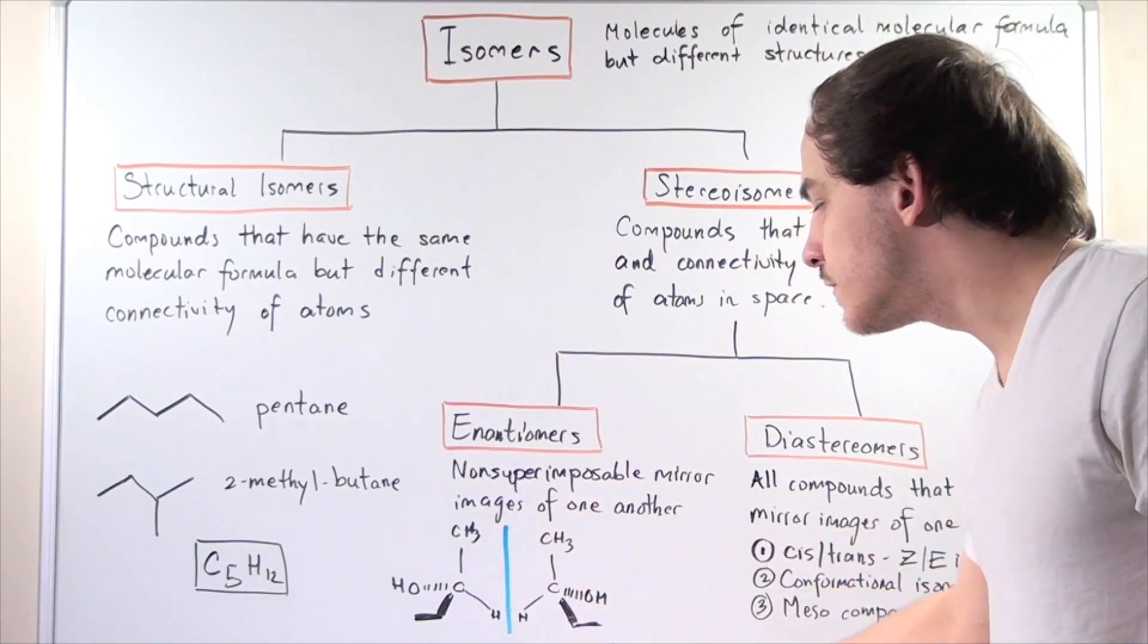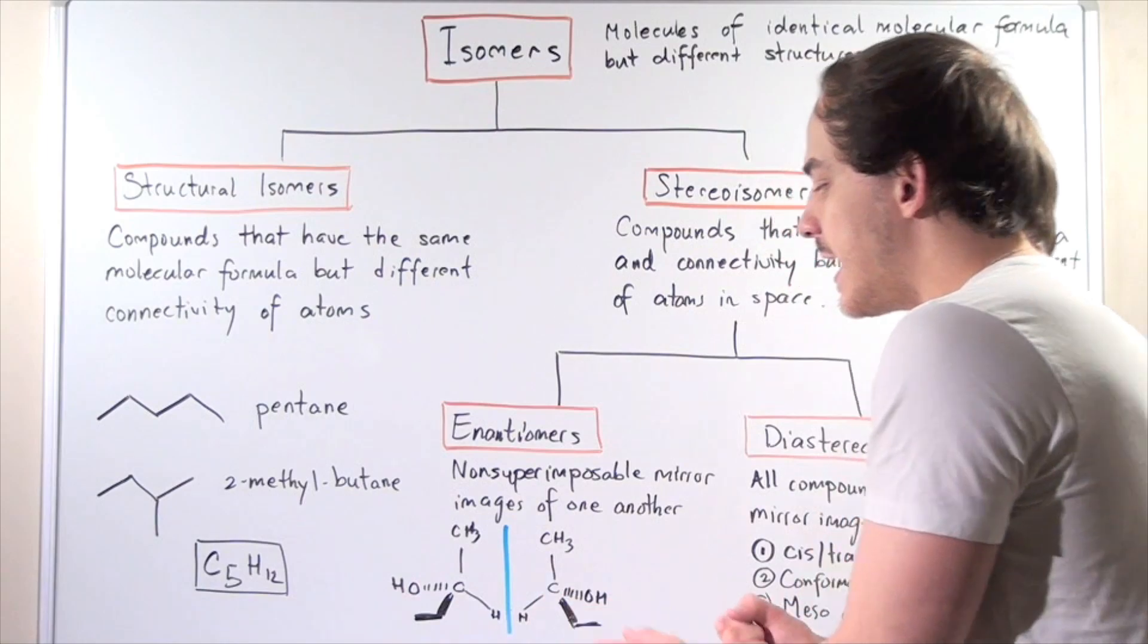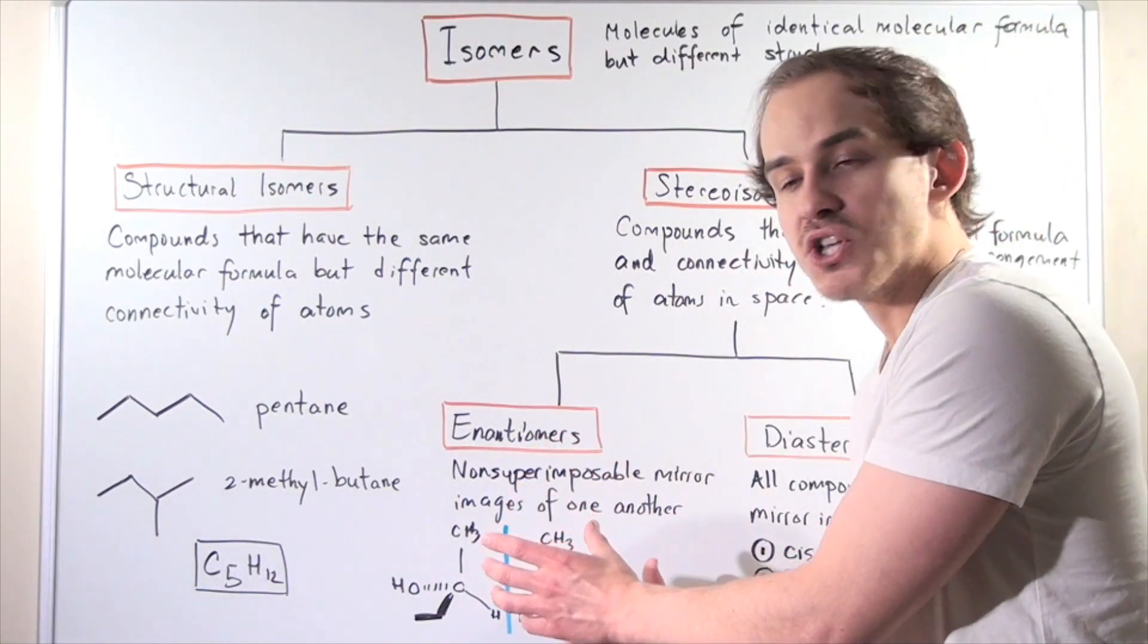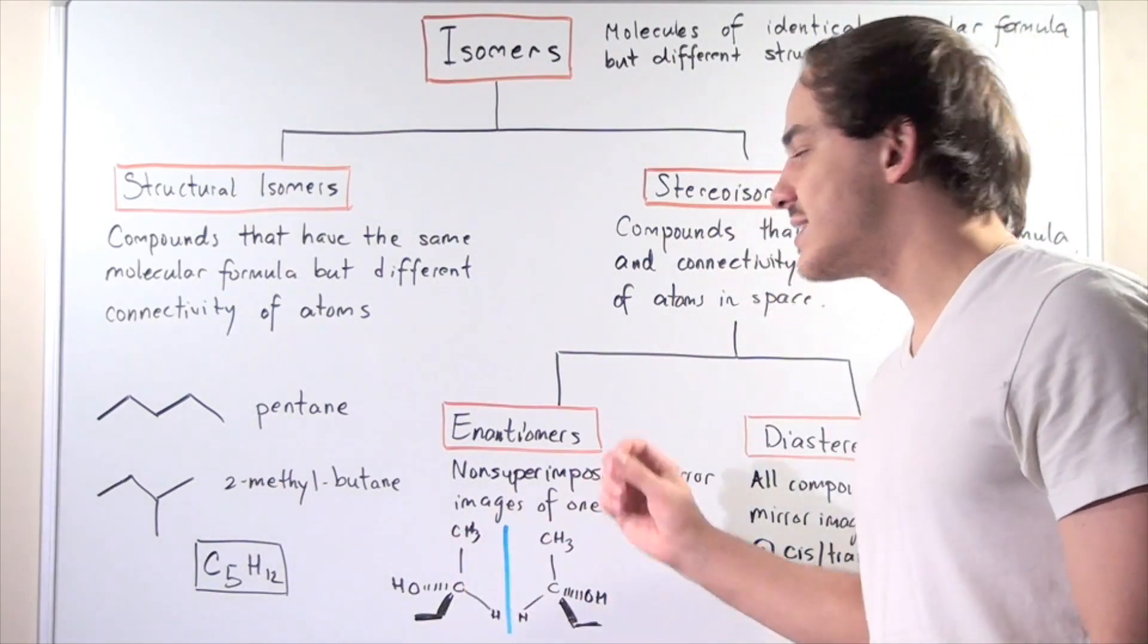...we get a different compound: compound A and compound B. These differ in the arrangement of atoms and they're mirror images of one another. They're not superimposable, and we know these as enantiomers.